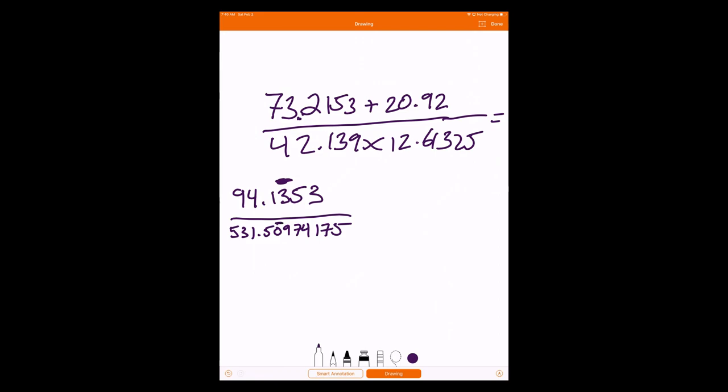Now when I do the final bit of division, when I divide 94.1353 by 531...the rest of that, I notice that's a division step. So I take a look at the numbers that I have marked. The numbers I have marked are now the significant digits I need to consider in the division. The numerator has four, the denominator has five, so I report my answer to four.